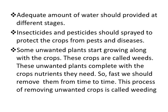Insecticides and pesticides should be sprayed to protect the crops from pests and diseases. Some unwanted plants also start growing along with the crops — these are called weeds. These unwanted plants compete with the crops for nutrients. We should remove them from time to time; this process is called weeding. If grass or unwanted plants are growing with the crops, we should remove them quickly because they also consume the water, light, and nutrients that the crop needs.